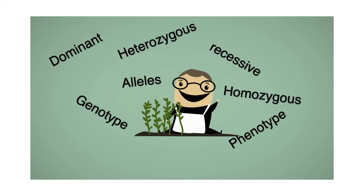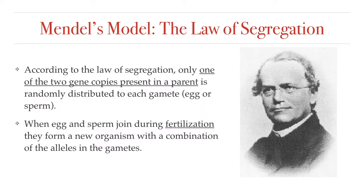His name was Gregor Mendel. In the previous lesson, you learned about Mendel's first law, the Law of Segregation, which basically states that each parent has two copies of each gene, and that when gametes are made by the parent — like when eggs and sperm are made — each gamete gets only one copy of each gene randomly.